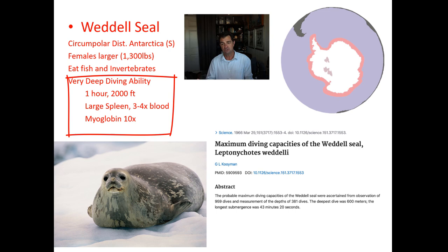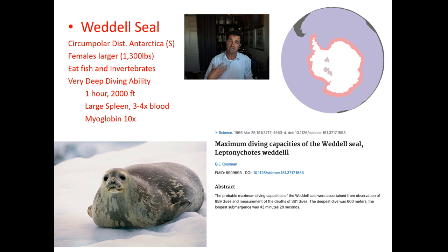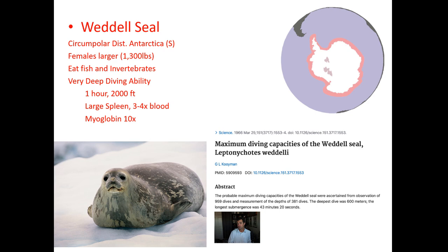You might think deep-diving mammals must have really big lungs, but what we've discovered is that these marine mammals actually don't have very big lungs — in fact, when they dive their lungs get compressed and almost collapse. It turns out they have a really large spleen and three to four times the amount of blood that a similar-sized land animal would have. They also have a protein called myoglobin at ten times the concentration we have, and both the myoglobin and the very large spleen allow the Weddell seal to store extra oxygen inside their blood, not in their lungs.